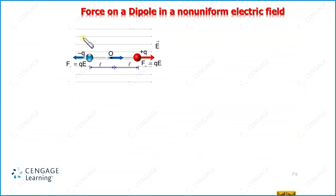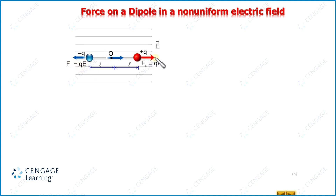Suppose a dipole is placed in a uniform electric field. Here you can observe this dipole is placed along the electric field lines — the dipole moment vector and electric field lines are making a 0 degree angle. This is the negative charge and this is the positive charge of the dipole. In a dipole, charges have equal and opposite magnitude separated by a small distance. The electric field is E, so the negative charge experiences force in the leftward direction of magnitude QE, and the positive charge experiences force of the same magnitude QE but in the rightward direction. That means the net force experienced by this dipole will be 0.